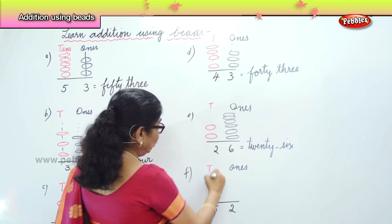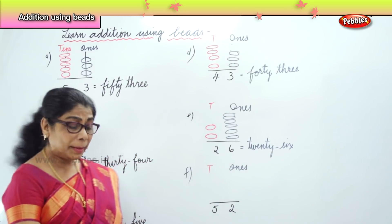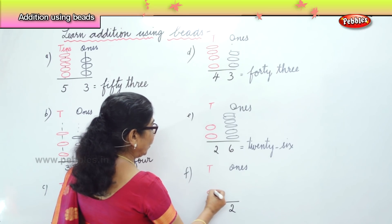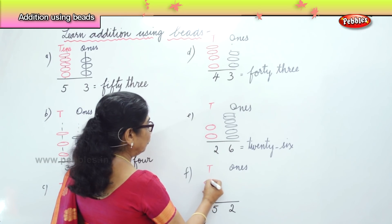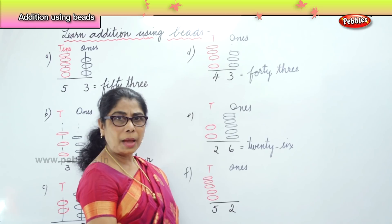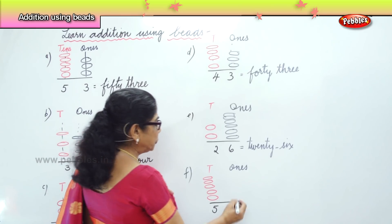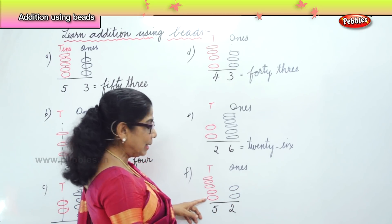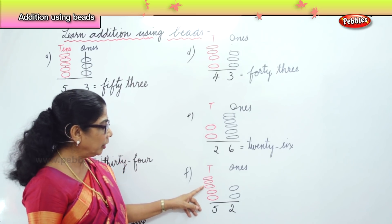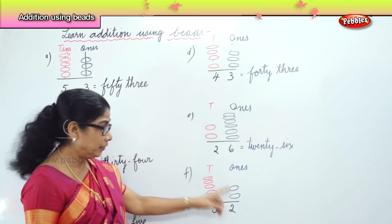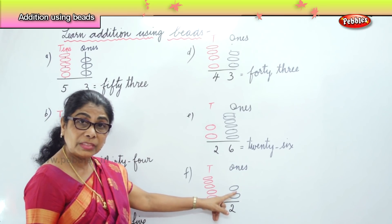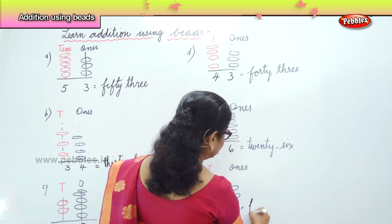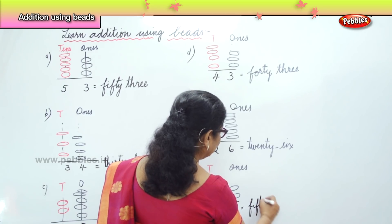Now, you have five tens. So how many beads will I insert? Five. Please say aloud: ten, twenty, thirty, forty, fifty. How many ones? Two. One, two. Now let's say it together: ten, twenty, thirty, forty, fifty, fifty-one, fifty-two. What is the number? Fifty-two.